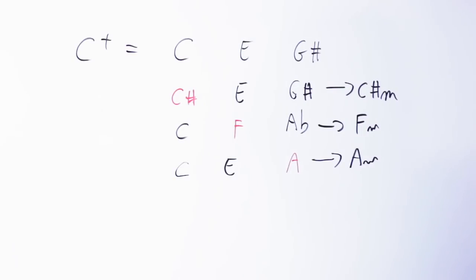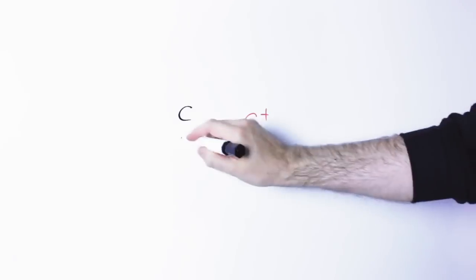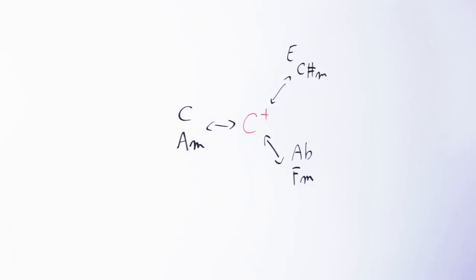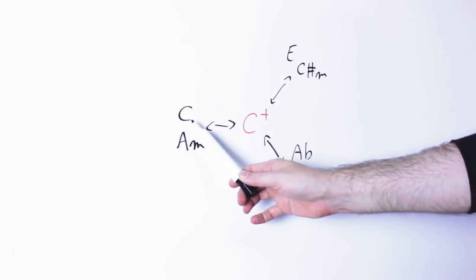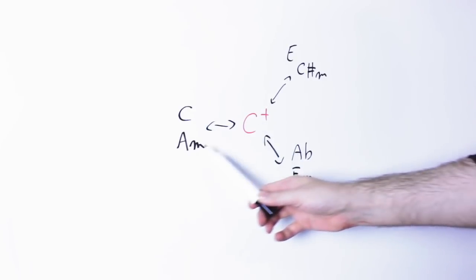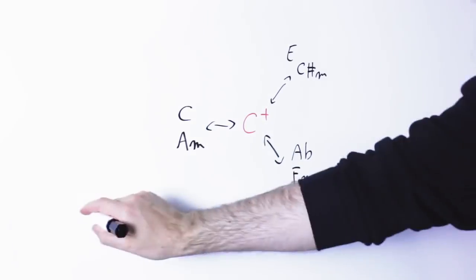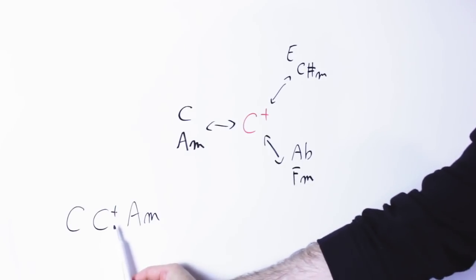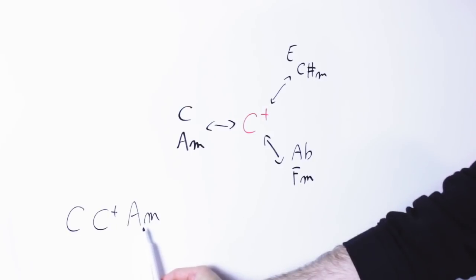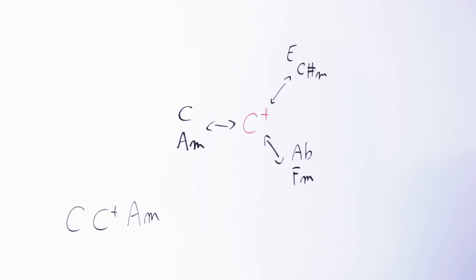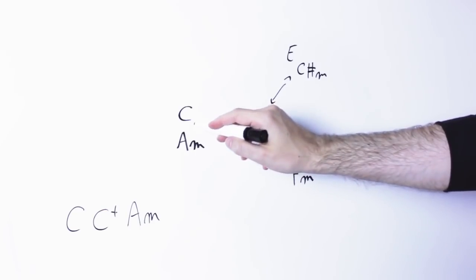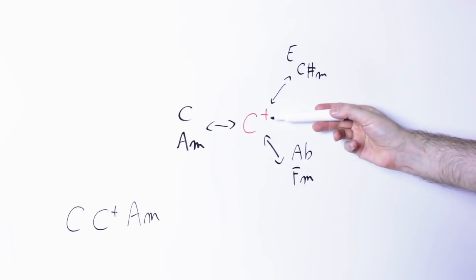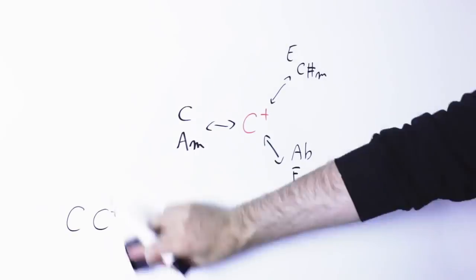This already gives us a lot of possibilities for this because, you see, for instance, I can play a C major chord, then a C augmented chord, and then an A minor chord. And I have a chromatic connection between them. Very smooth. But I can also change my direction and go C major, C augmented, F minor.